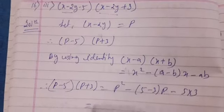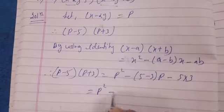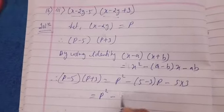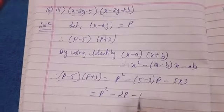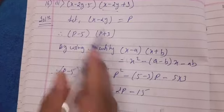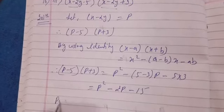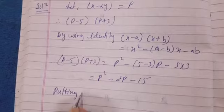So this is P² - 2P - 15. Now we will put value of P here in this equation, putting value of P in above equation.